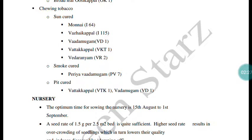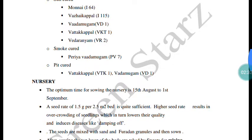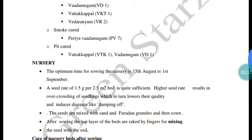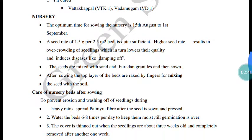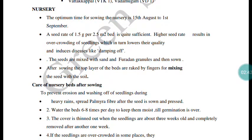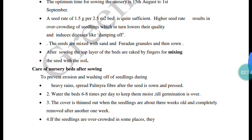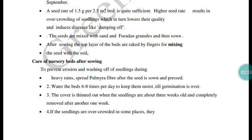Tobacco is a transplanted crop. The seeds are very small in size — about 1.5 grams covers the nursery requirement. Seeds are raised in nurseries. Overcrowding should be avoided to prevent disease. The nursery should be protected from direct sunlight.